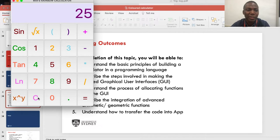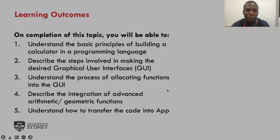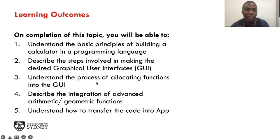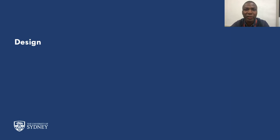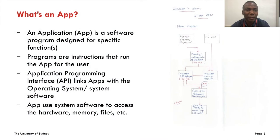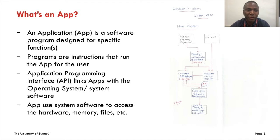So that's what we're trying to build in this presentation — understanding the process of allocating the functions, including the arithmetic and geometric functions. And finally, we're going to mention how to transfer the programming code into an application that you can actually use. The first step in making a calculator is to have a mental picture of what you actually want to build. This is where the design process comes in. An application is simply a software program designed for a specific function — in this case, a calculator for arithmetic or geometric purposes.